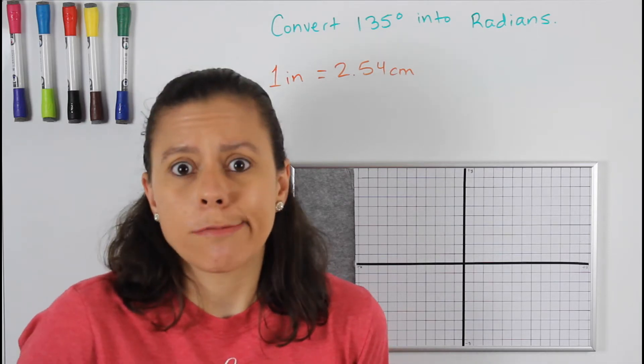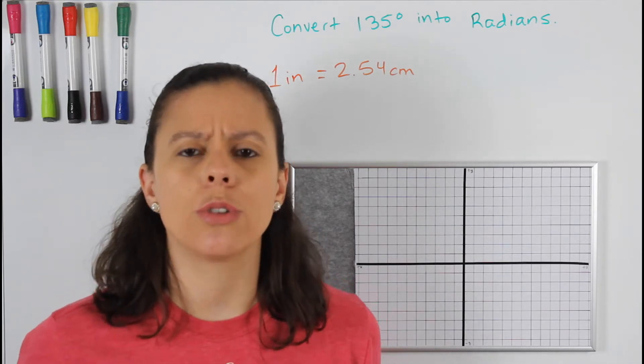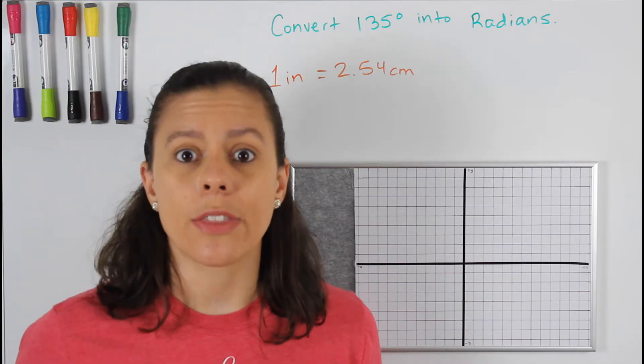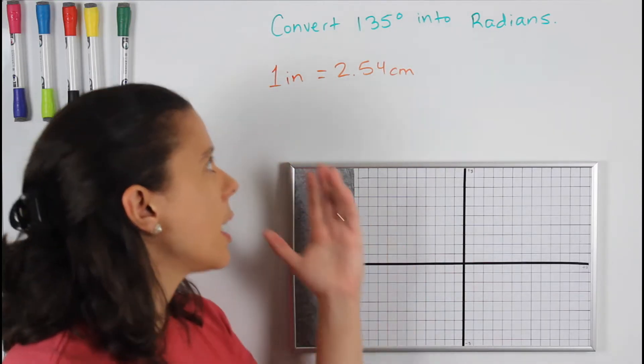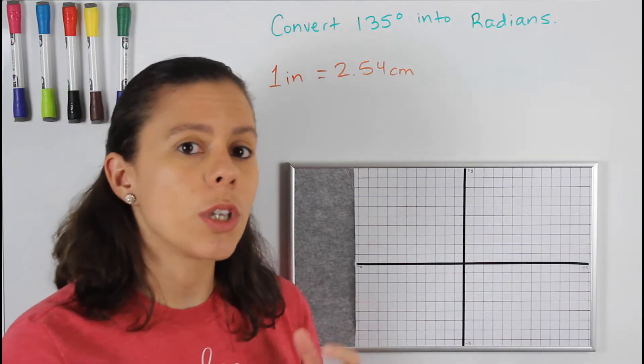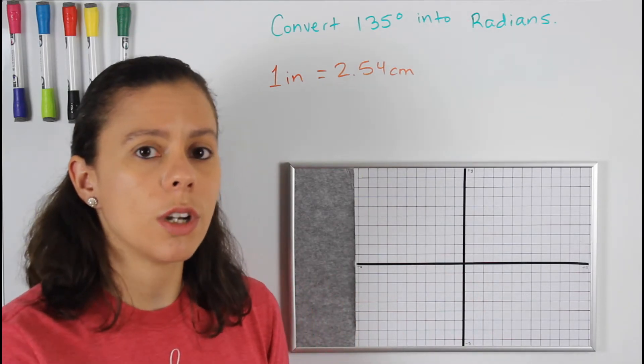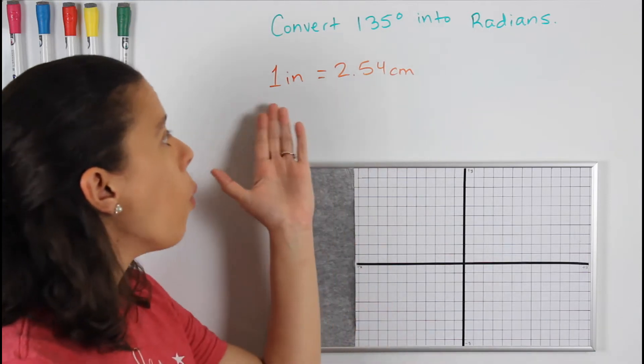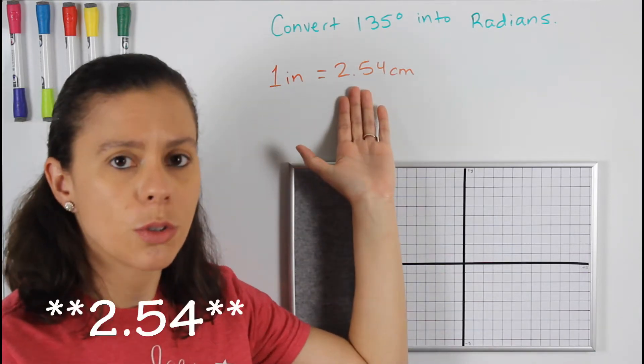Like in real life, we have other stuff that we use two different units to measure, like length of something. We use centimeters and inches, and we can go from one to the other. What we use to go from one to the other is the ratio of one inch to 2.54 centimeters.